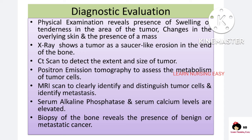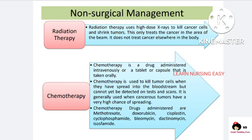In diagnostic findings: physical examination shows swelling, tenderness in the area of the tumor, change in skin color where the tumor is present, and a mass may be felt. X-ray shows saucer-like erosion at the end of the bone. CT scan shows the size of the tumor. Positron emission tomography is a nuclear test to see the metabolism of tumor cells. MRI scan can identify and distinguish the type of tumor cells. Serum alkaline phosphatase and serum calcium levels will be elevated due to excess bone destruction. Biopsy — either needle or open biopsy — can confirm the presence of benign or malignant cancer.